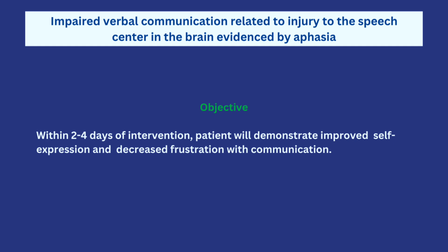Now that we understand the nursing diagnoses, how we came up with them, the objectives and how they should be written, let us go over the nursing interventions, scientific rationale, and evaluation. The first nursing diagnosis is impaired verbal communication. The objective is that within two to four days of intervention, the patient will demonstrate improved self-expression and decreased frustration with communication. Two to four days is realistic because the effect of stroke on the speech center is a lasting one — it usually takes a while.